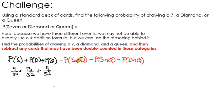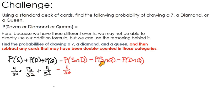Yes — the 7 of diamonds. There is one card that got counted in the 7 category and in the diamond category. This 7 of diamonds got counted in both, so we subtract one out. Are there any cards that are both 7s and queens? No — those are mutually exclusive. There's no way to be both a 7 and a queen, so nothing got double counted there.